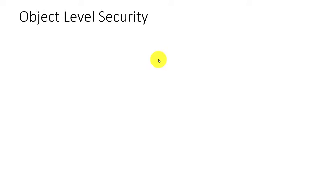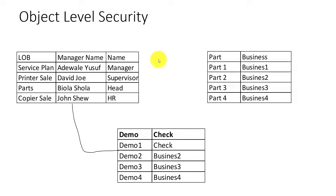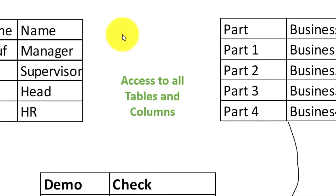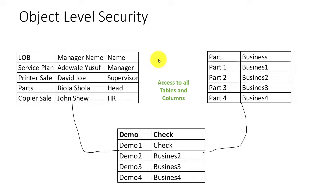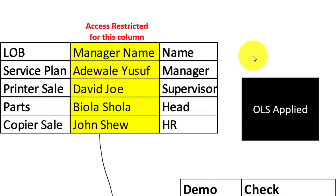It is very essential that when you are planning a project you should have a strategy for OLS — object level security. By default in Power BI, when you publish a report your model with all the linked tables, everybody has access to all columns and all tables. Object level security is applied when you actually restrict access for a particular column.